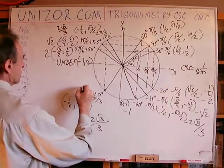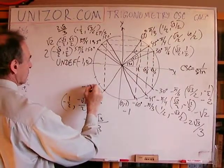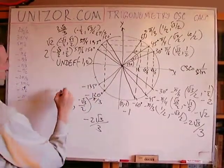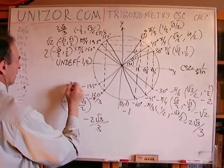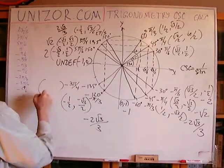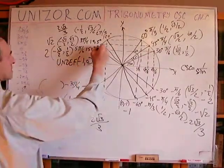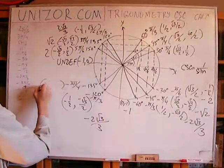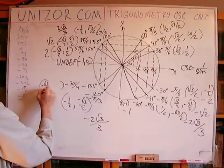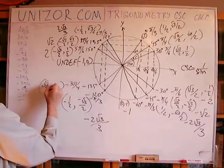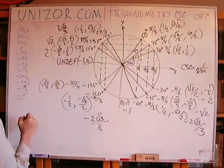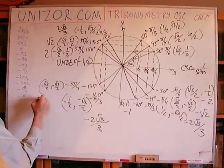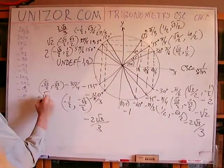This is minus 135 degrees, which is minus three pi over four. The symmetry is with plus 135 degrees, giving an ordinate of minus square root of two over two. So the cosecant is minus square root of two.